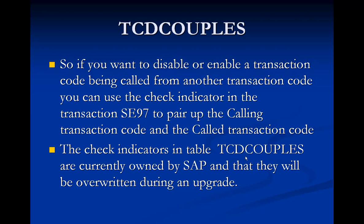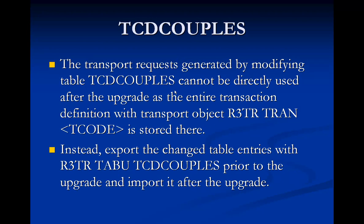The check indicators in table TCD Couples are currently owned by SAP and will be overwritten during an upgrade. So whatever changes you make, the system will create a transport request. You need to keep a note of that transport request so that in case of a system upgrade, you can re-import the transport after the upgrade. The transport request generated by modifying TCD Couples cannot be directly used after an upgrade as an entire transaction definition — the transport object R3TR TRAM Tcode is stored there. Instead, export the changed table entries with R3TR TRAM TCD Couples prior to the upgrade and import it after the upgrade.